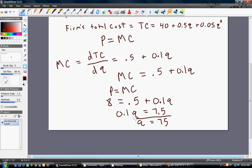For this firm to maximize profits, this firm would produce 75 units. And as a perfectly competitive firm, you have no choice but to charge the going market price of $8. Let's go ahead and calculate the firm's revenues and total costs.